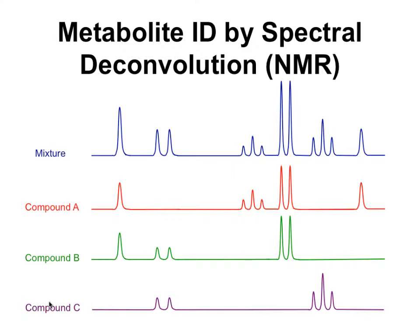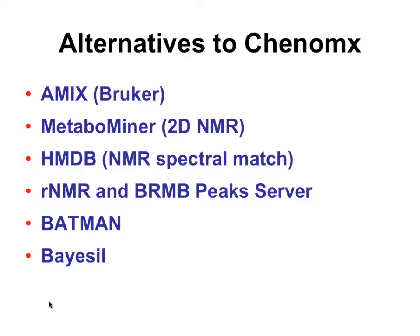We did spectral deconvolution. You guys had the experience of looking at a real biofluid sample and had a chance to figure out where acetone was, and DSS, and alanine, and maybe even citrate or a couple of other ones. We used the Konomics software. It's quite user-friendly — it's had lots of years of development and I think lots of people agree that it is particularly user-friendly.